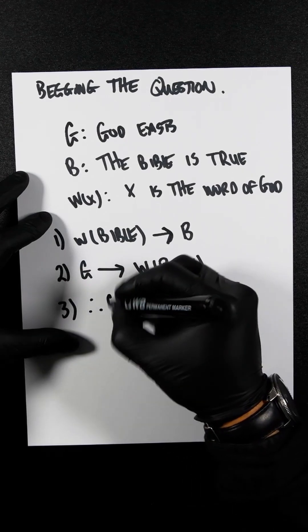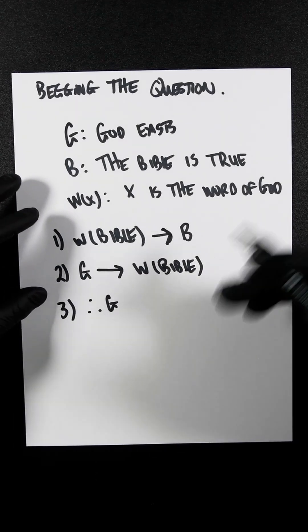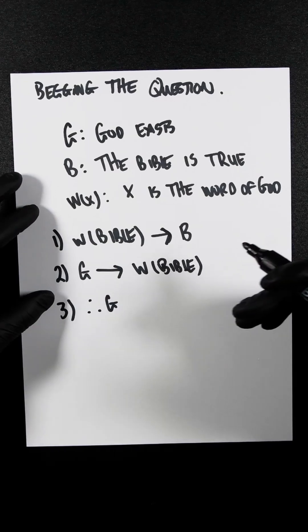So therefore, G, therefore God exists. In valid deductive reasoning, the conclusion must follow from independent premises.